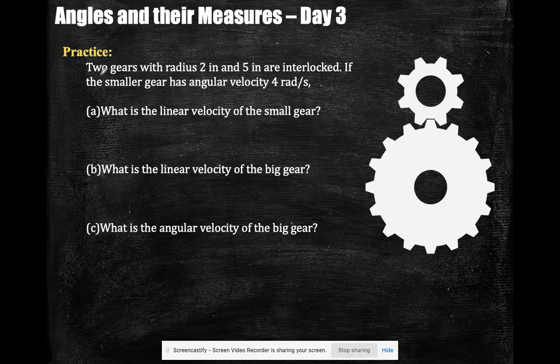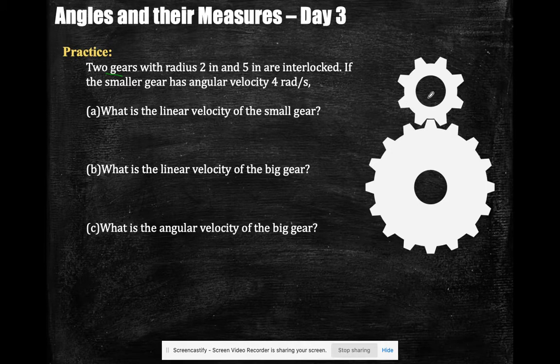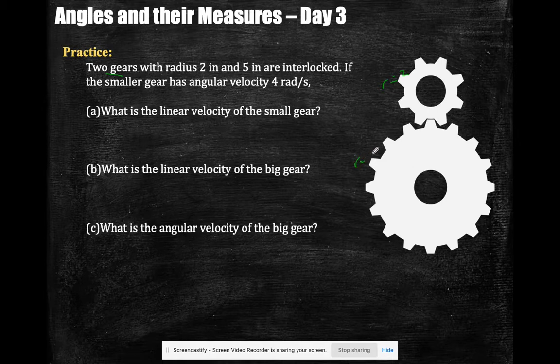So let's look at this one. You have two gears with a radius of 2 inches and a radius of 5 inches. So I have one small gear, one large gear. They are interlocked.